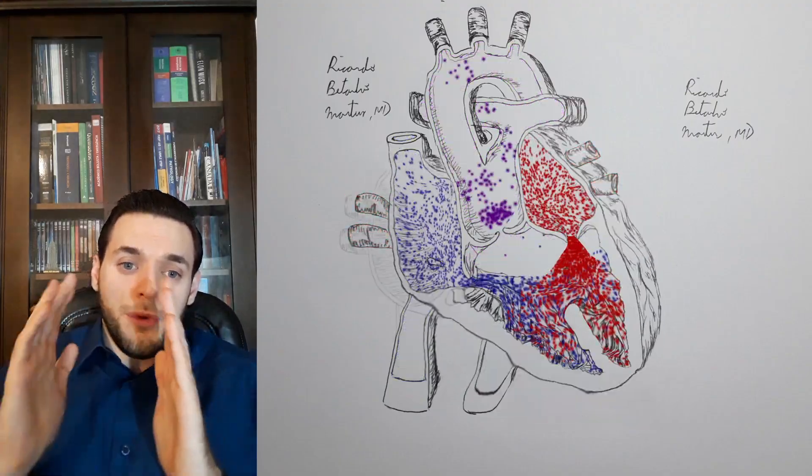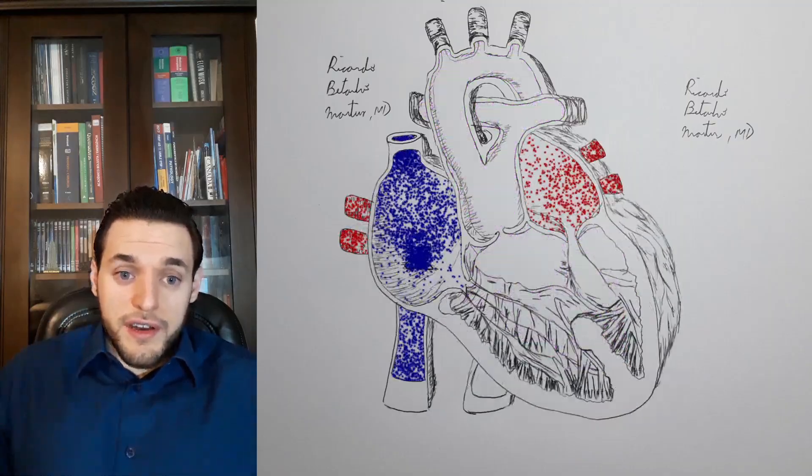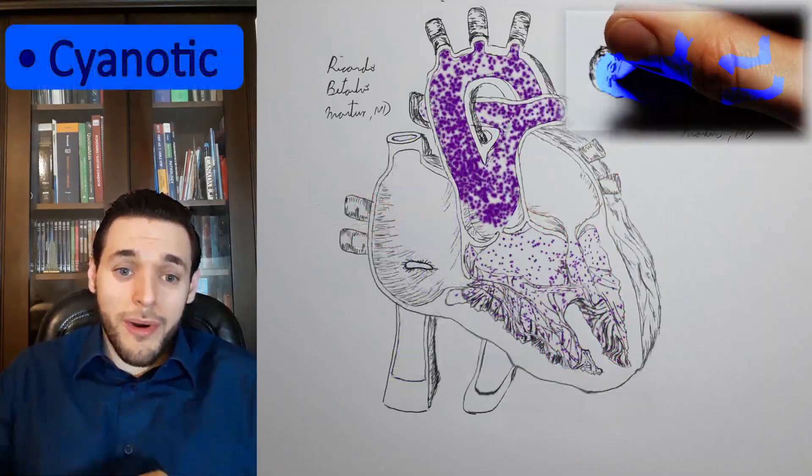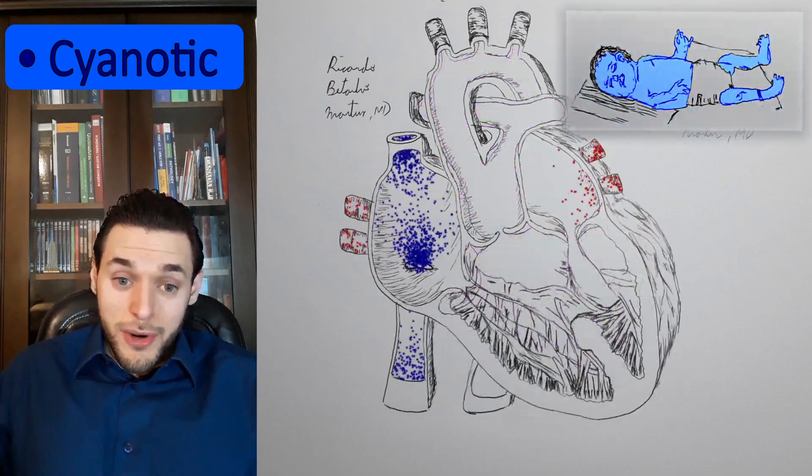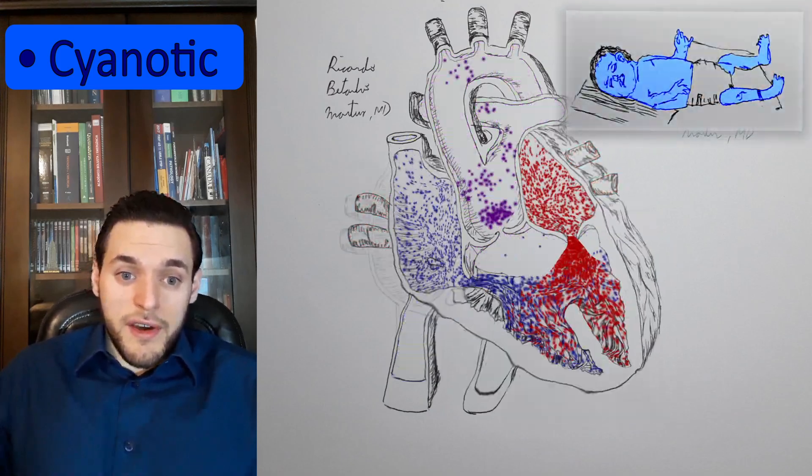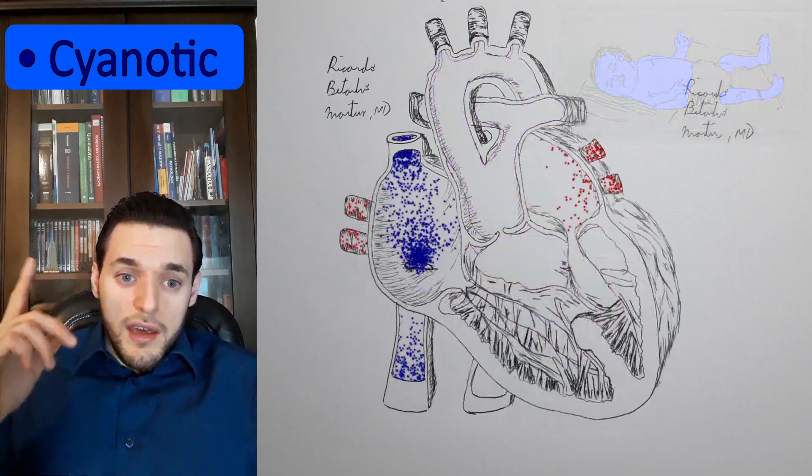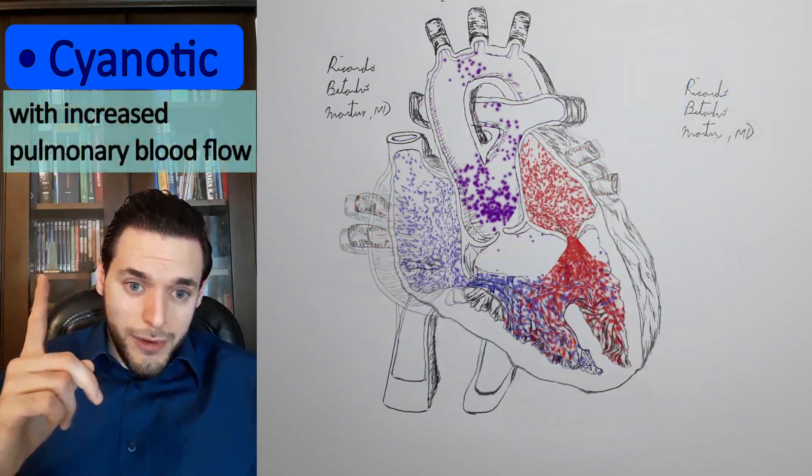Therefore, persistent truncus arteriosus is classified as a cyanotic congenital heart disease. Amongst the cyanotic congenital heart diseases, it's classified as a cyanotic disease with increased pulmonary blood flow.